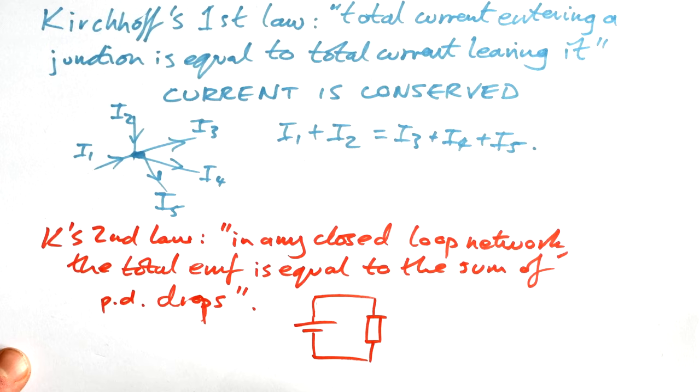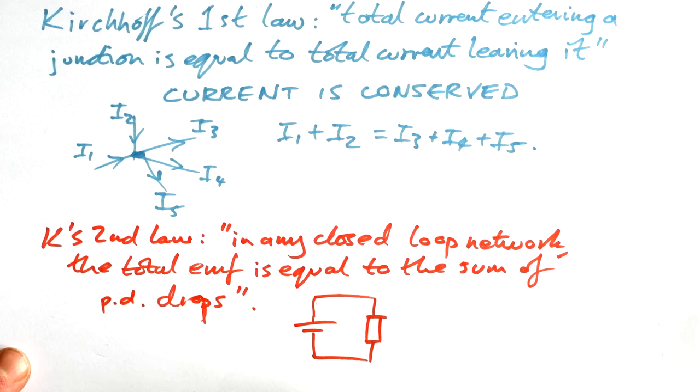This is the simplest circuit that we can have. We have an EMF here and we have a voltage across here. We know that if this EMF is six volts, then the PD drop across this resistor must also be six volts. If we have two resistors in there, again, the total PD drops across both resistors must be six volts.